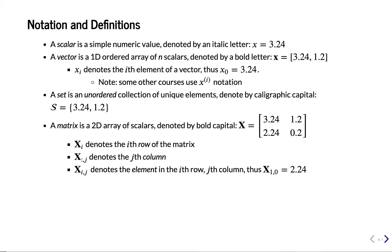First, some notation and definitions because we will look at quite a few formulas in this course. Whenever you see a curly or italic letter X, that means it's a scalar — it's just a number like 3.24. If you see a bold letter X, that means it's a vector — a one-dimensional array of scalars. X sub i denotes the i-th element of the vector X, and it's zero-based, so X0 means 2.24.